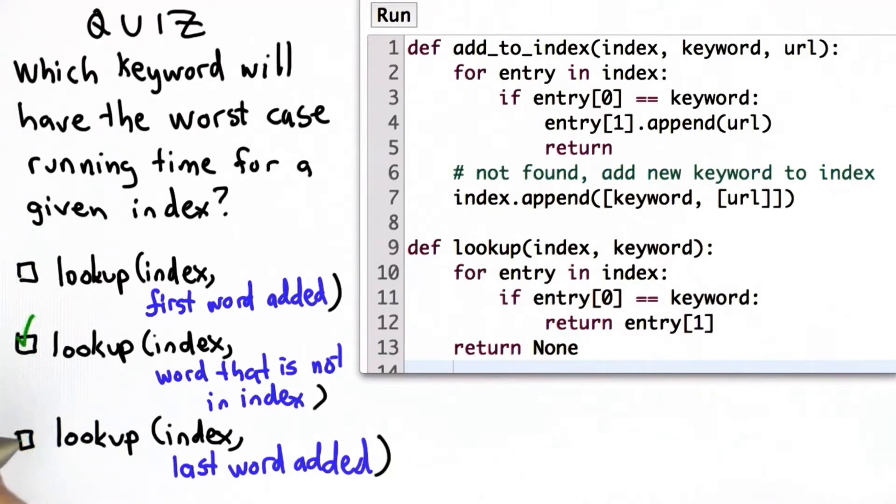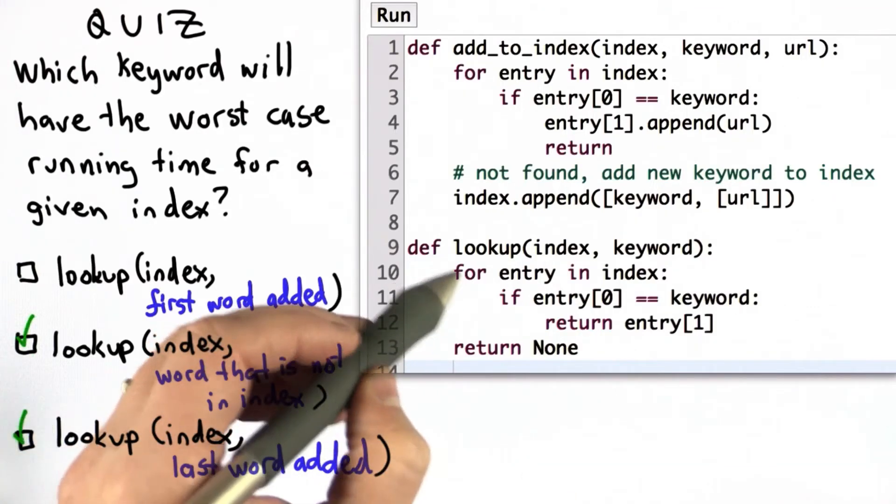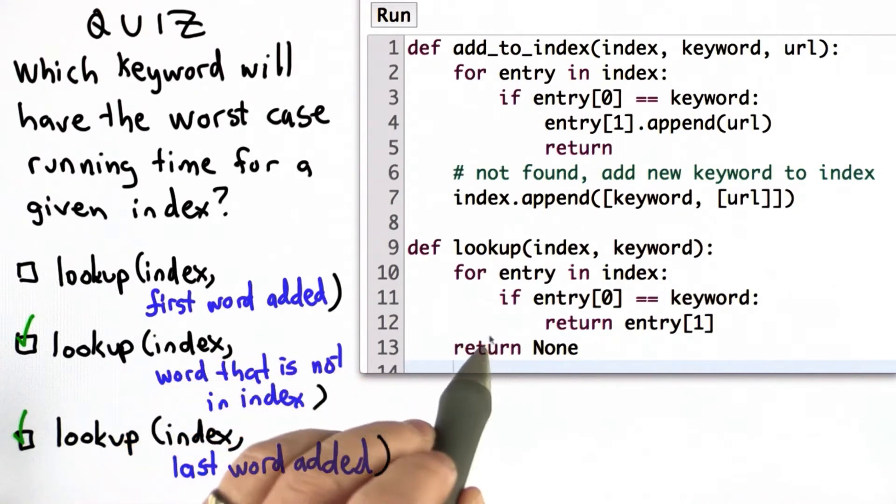So the answer is both of the last two. Both of these will need to go through the loop here, the number of elements in the index times.